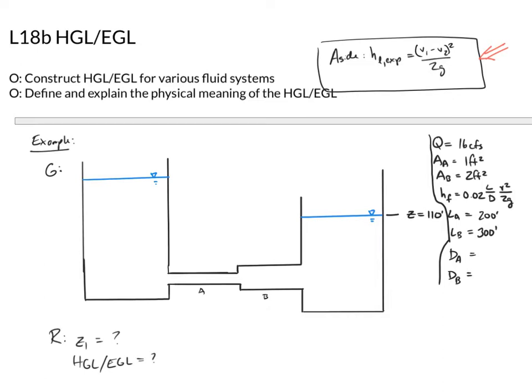We've got two reservoirs — I'll call the left one reservoir one, and we'll call the left surface point one and the right surface point two. The fluid is flowing from reservoir one to reservoir two. I chose those points because they're on the surface, so there's no v-squared over 2g and no pressure term at the surface.